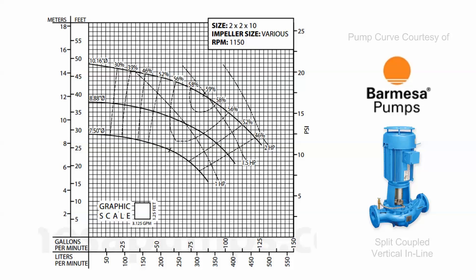This pump curve also shows efficiency, but in a somewhat different format. The efficiency is laid out by tick marks — 30, 39, 46, 52 — representing the percentage of efficiency at that particular spot on the performance curve, and these form curves themselves. The most efficient this pump can be is 59%, and the center line of that efficiency runs from the most efficient point for each particular impeller trim, which corresponds relatively to the center of that performance curve.